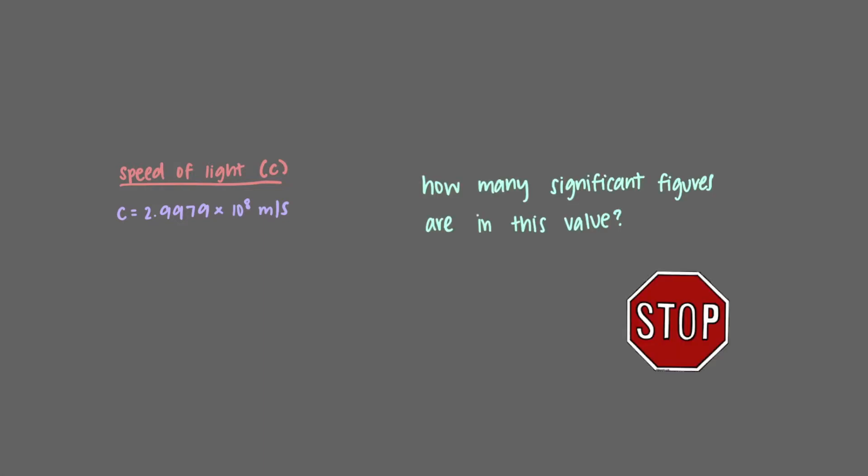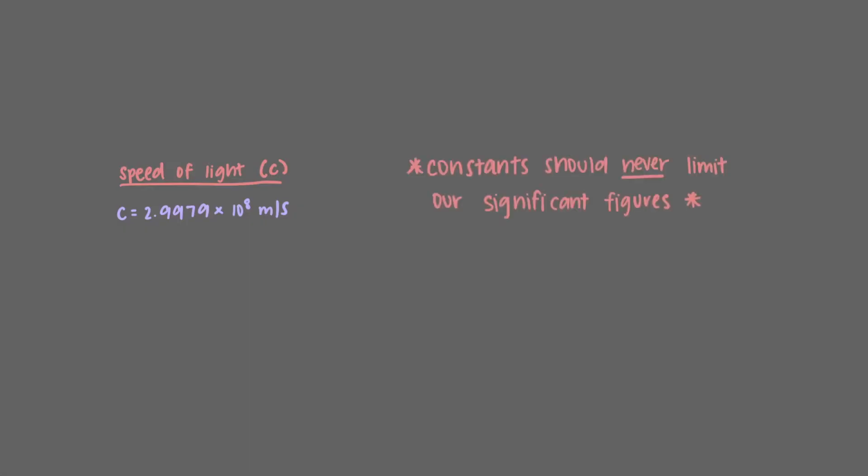Let's look at light for our next example. We'll learn more about light later in chemistry. All we need to know for now is that the speed of light is a constant equal to 2.9979 times 10 to the eighth meters per second. How many significant figures are in this value? The speed of light is a constant of nature. While we've measured this value using experiments, we always will know constants to way more figures than we need in a problem. Constants should never limit our significant figures.